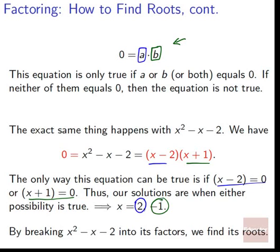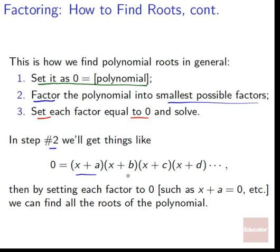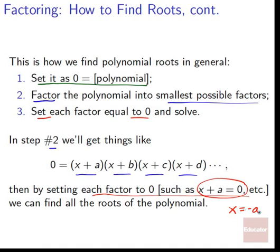By breaking x² - x - 2 into its factors, we can find its roots. Here is the general procedure: first, set 0 = polynomial. Second, factor it into the smallest possible multiplicative factors. Third, set each factor equal to zero and solve. For example, from a factor (x + a) = 0, we get x = -a as one of our solutions.